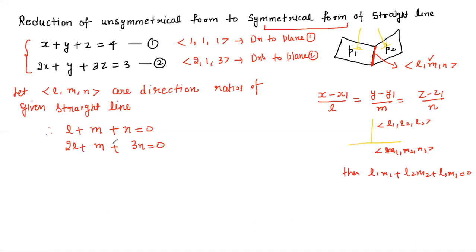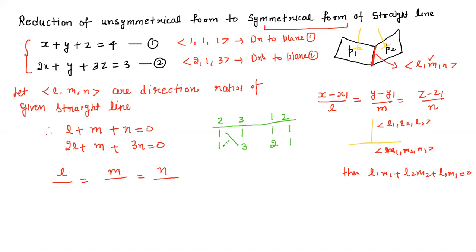We will now solve for L, M, N using the cross-ratio method. We use the pattern: 2, 3, 1, 2 — taking second and third coefficients. Third place values are 1 and 3, first place values are 1 and 2, second place values are 1 and 1. So: L = 3 − 1 = 2, M = −(2 − 3) = −(−1) = but here we get M = −1, and N: 1 − 2 = −1.